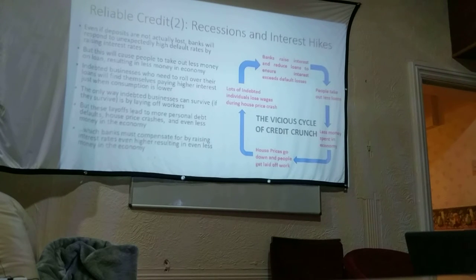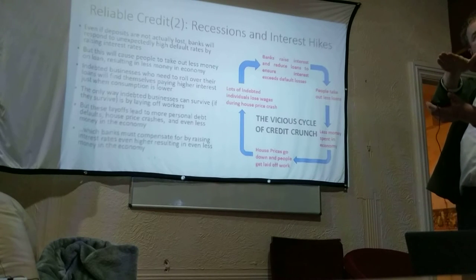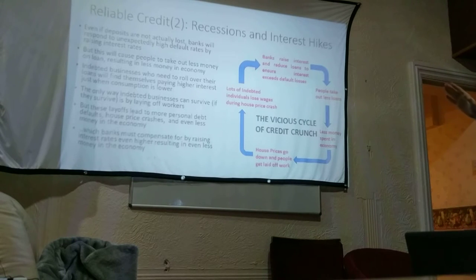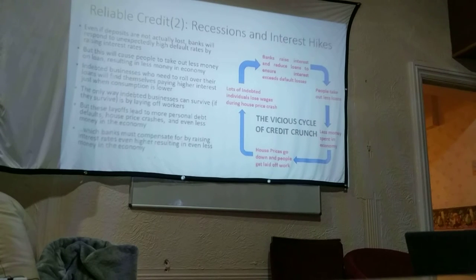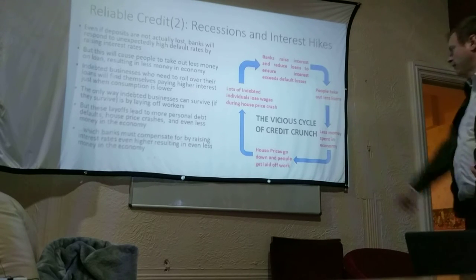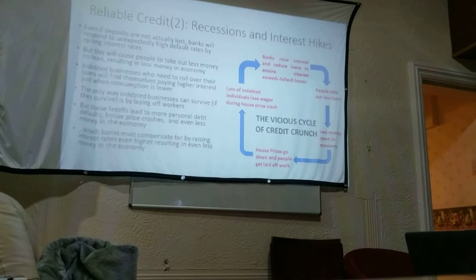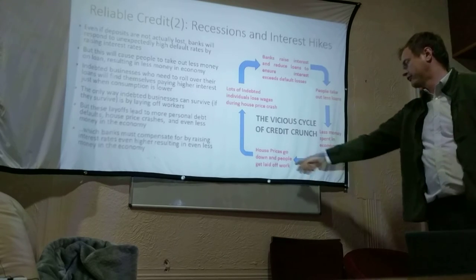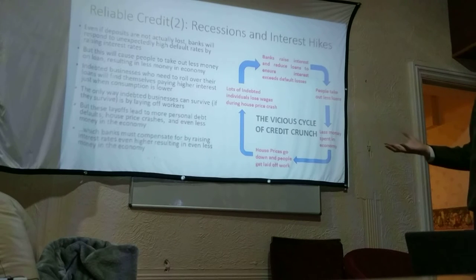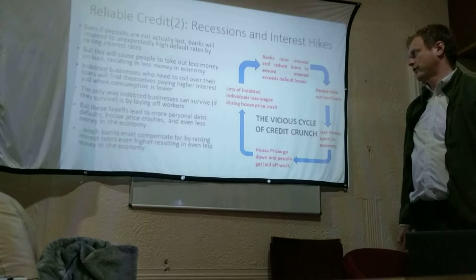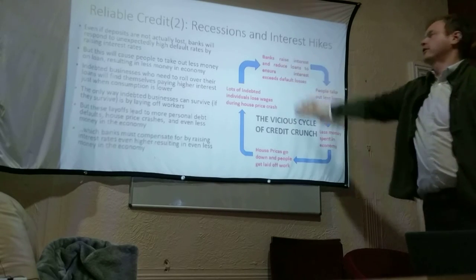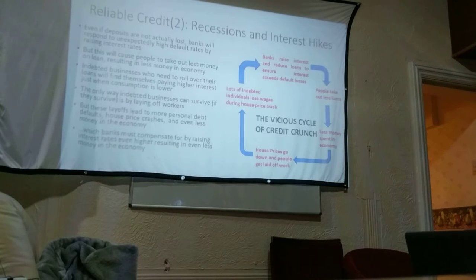There's a second, less dramatic version of a recession: the bank doesn't actually reach the point where it runs out of deposits, but it starts to make a loss. The debt defaults are exceeding interest revenues, so it has to raise interest rates to boost interest receipts and cover the default rate. But if you raise interest rates, people take out fewer loans. Less lending means less spending in the economy, fewer mortgages, and house prices go down — and because people can't get loans to buy consumer services, people get laid off. This causes indebted individuals to lose wages during the house price crash, which causes more defaults, which causes banks to raise interest rates higher — another vicious cycle of how recessions happen.